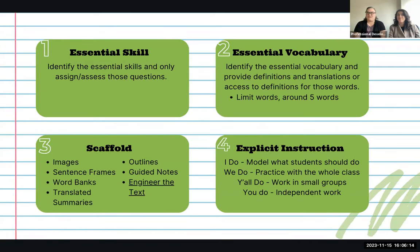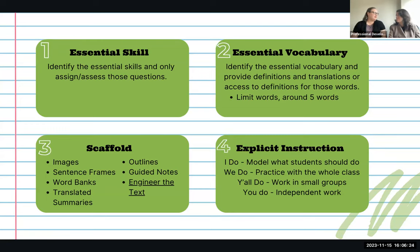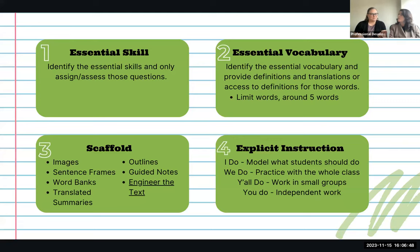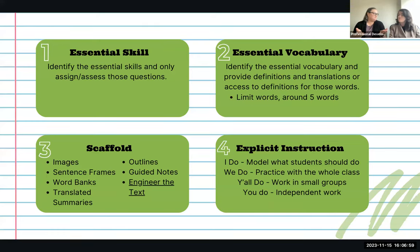Step one is to identify the essential skill — the most important thing you want students to be able to learn and do. Make sure it's communicated clearly: what is the learning intention and success criteria? For example, if students are learning to identify the theme in 'The Most Dangerous Game,' there are many things happening, but the essential skill for that lesson is identifying the theme. That is what we scaffold and assess for our ML students.